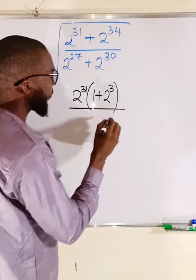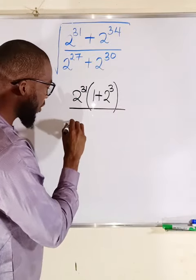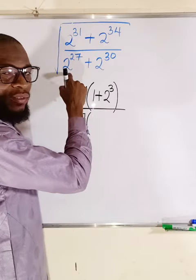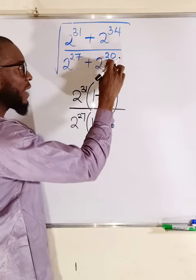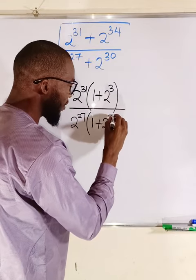You divide by, you come down here. I think 2 to the power of 27 is smaller here. So we have 2 to the power of 27. Inside from the first time we have 1 left, plus 2 to the power of 30 minus 27, which is 3. So this is 3.